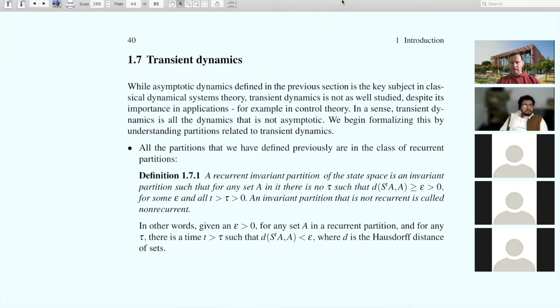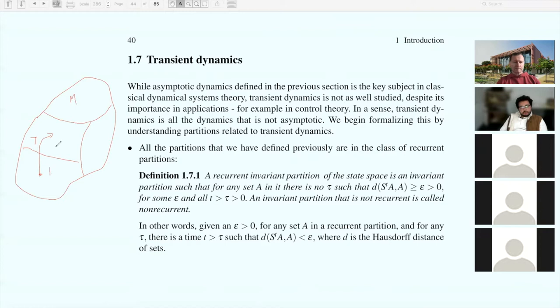All of the partitions that we defined previously are what we call recurrent partitions. Here is your state space M, and we're going to partition the state space M. If we had dynamics defined by a map T on M, we asked: is there any partition of the state space into sets labeled one, two, three, four?